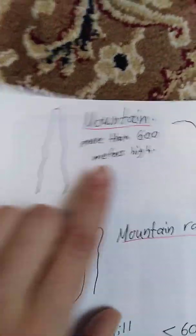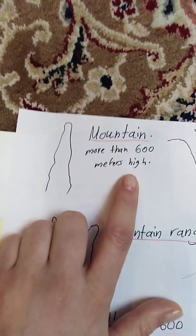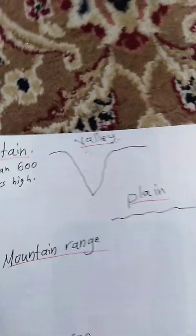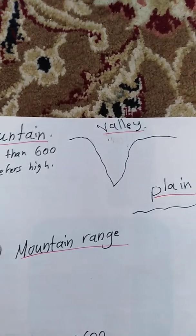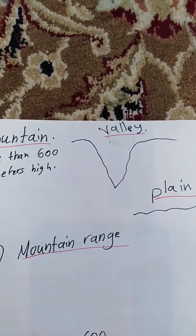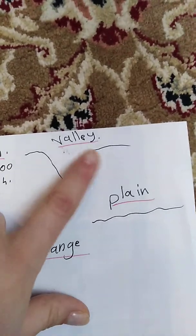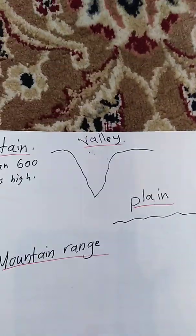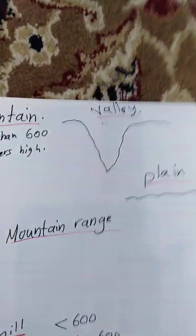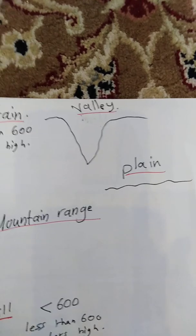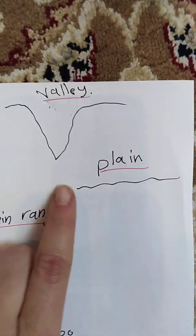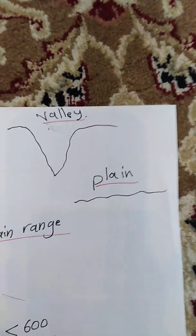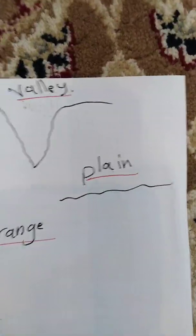It starts from six hundred meters high. The second landscape is called a valley. It's a long strip of land which is lower than the surrounding land. And a plain is a flat area — it doesn't go up and down.